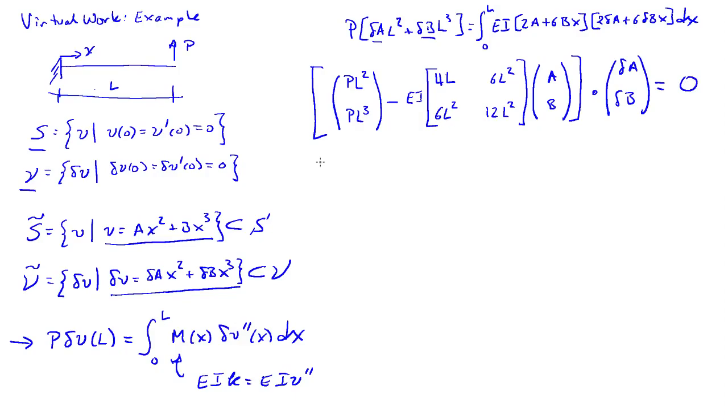This is my virtual work equation. This needs to hold true for all test functions. And in particular, that means for all del A and for all del B. The only way for this to be equal to zero for all del A and del B is for what's in the square brackets here to be zero. So we end up with a set of linear equations.